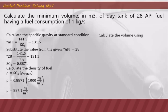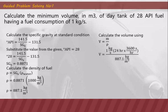We calculate the volume using the density-mass-volume formula: volume equals mass over density. Since the consumption is one kilogram per second and this is a day tank supplying for 24 hours, we convert to total kilograms by multiplying by 24 hours times 3600 seconds per hour, then divide by the density. The minimum volume for the day tank is 97.40 cubic meters — quite a large container.